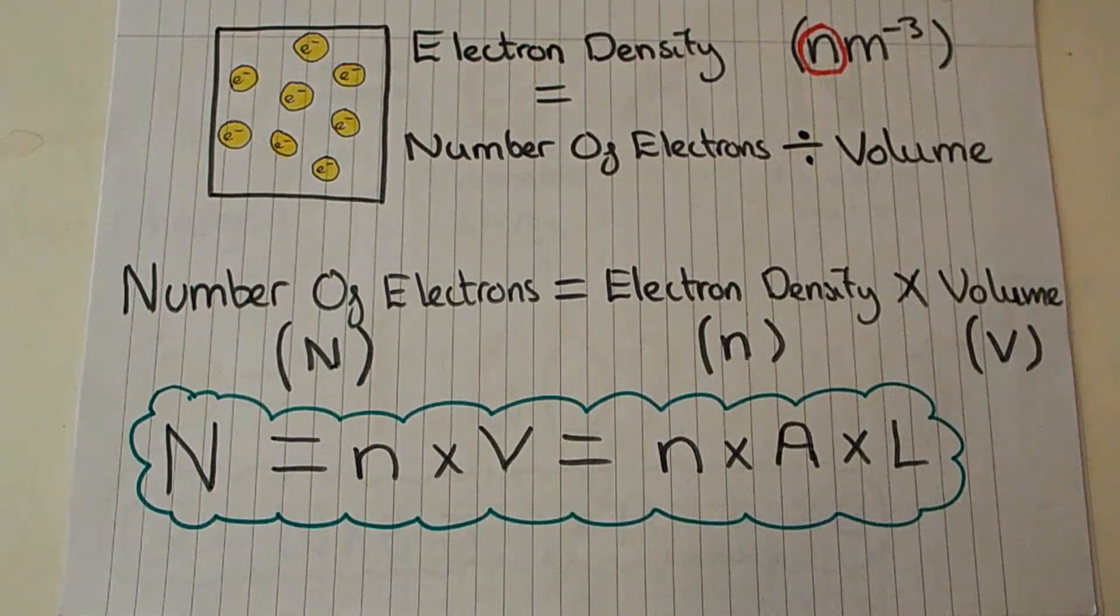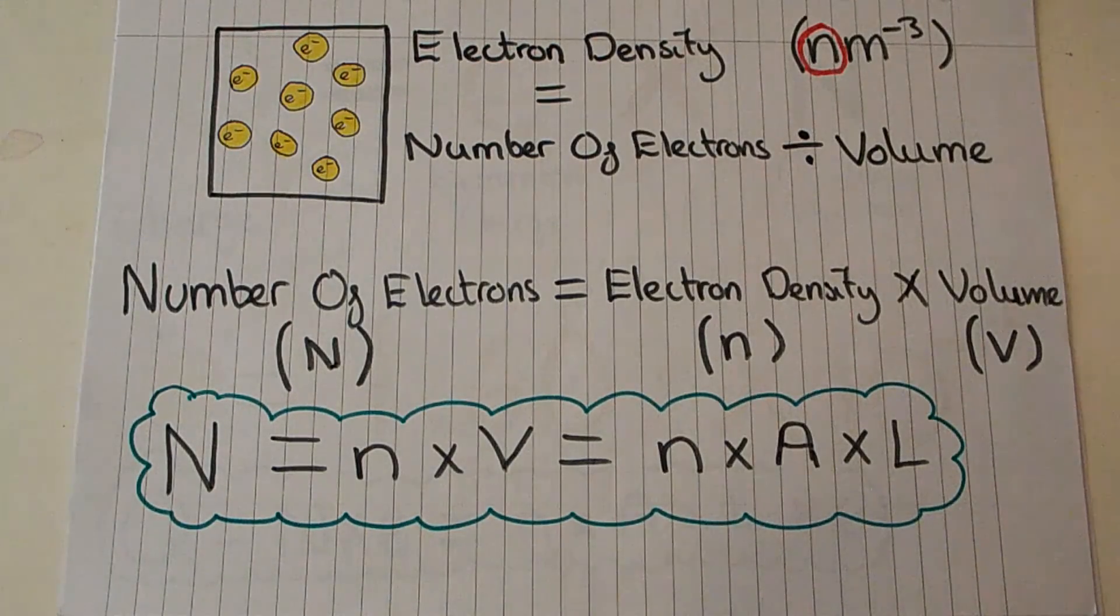For our next step we want to look at electrons and electron density. Electron density is simply the number of electrons divided by the volume - just like normal density, it's the amount of something divided by how much volume we have of it. So we can rearrange that and our number of electrons is equal to the electron density times the volume.